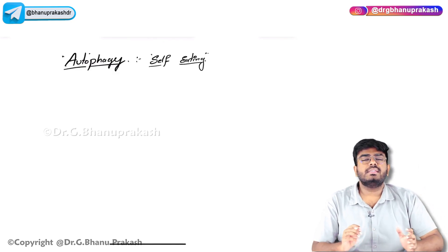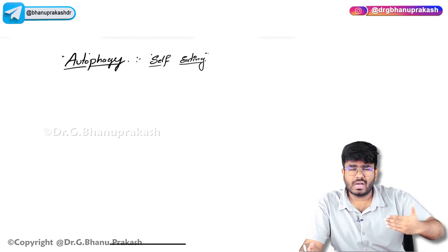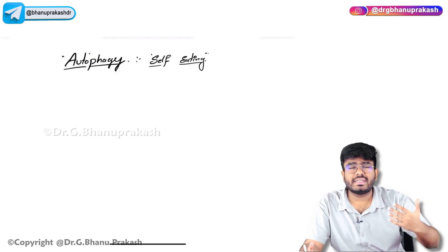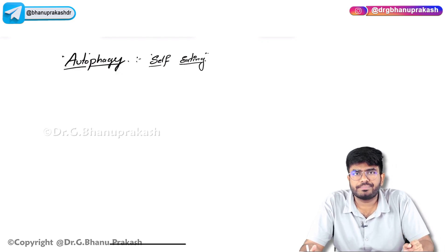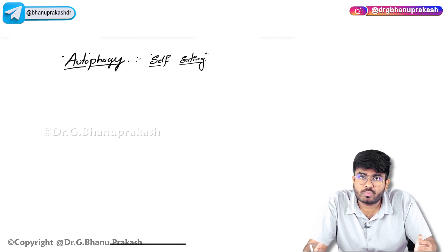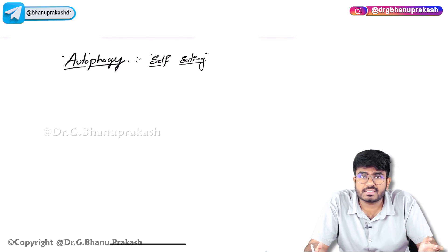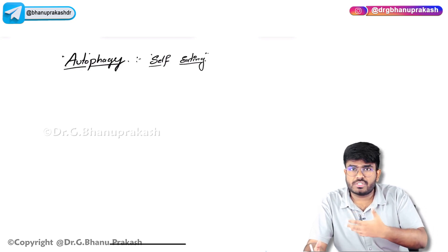For example, you are not eating anything — you are doing fasting for hours, days pass. You have to get energy somehow. What happens is your cells will digest your own cell organelles. For example, your mitochondria is there. Mitochondria has lots of proteins; the inner membrane of mitochondria has a lot of complexes. Those complexes, which are made up of proteins, will be broken down, and by taking those proteins, energy is going to be generated.